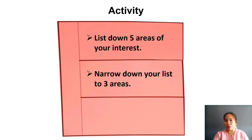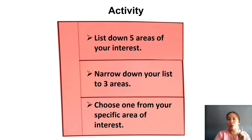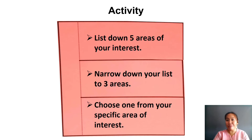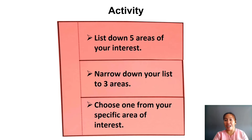After listing down five areas that interest you, narrow down your list to three areas. Then choose one specific area of interest. For example, if you narrow down your choice to social issues, select a specific issue under it. Let me know the specific areas that interest you in the comments below, and do not forget to tell me your reason for choosing that topic.